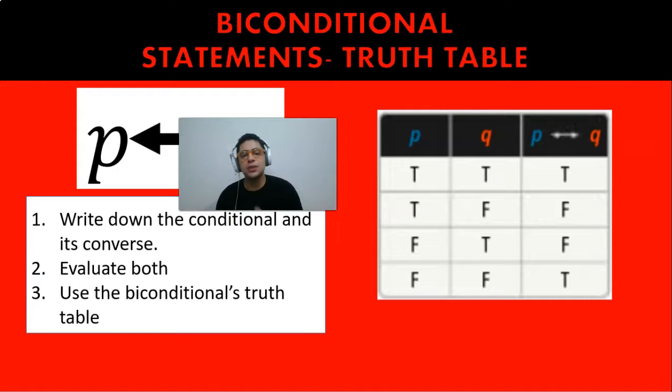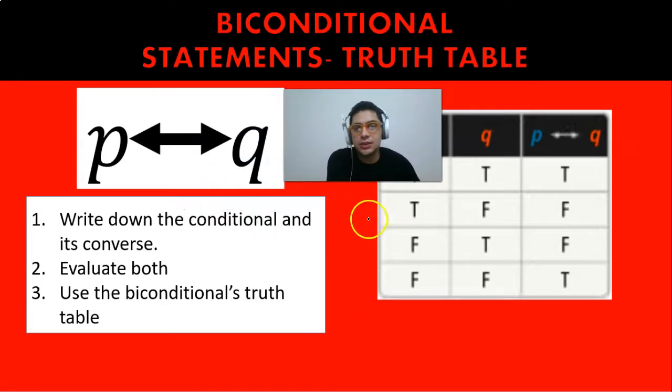Now as we see down here you can check also these steps. So the first thing is that we write that conditional, we write the converse, we evaluate both the conditional and its converse. If both are true or both are false, then we can write the biconditional as a true statement with the use of the truth table which we have here.